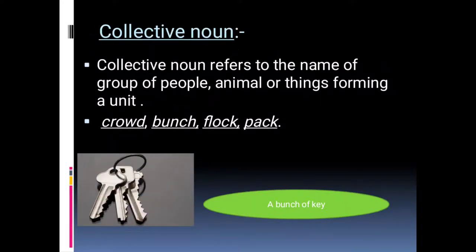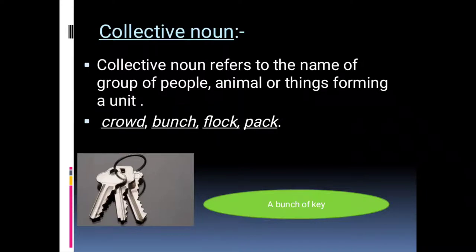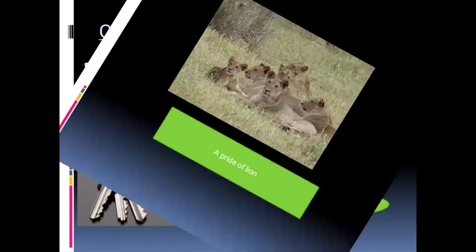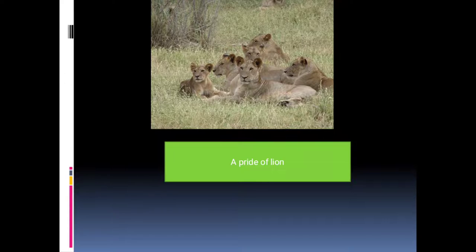Collective noun refers to the name of a group of people, animals, or things forming a unit. Examples of collective noun: crowd, bunch, flock, pack — these are all collective nouns. For example, if I have two or three keys with me, I will call the group of keys 'a bunch of keys.' If I saw too many lions in front of me, I would call that group 'a pride of lions.'